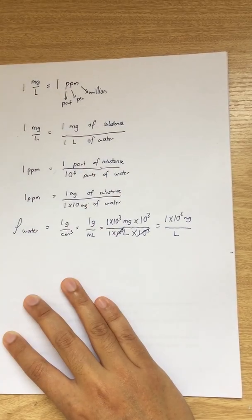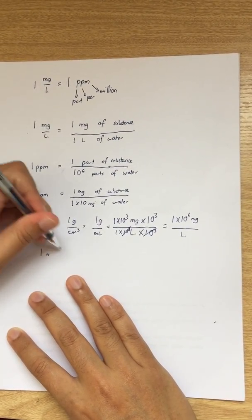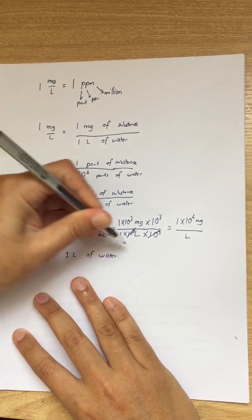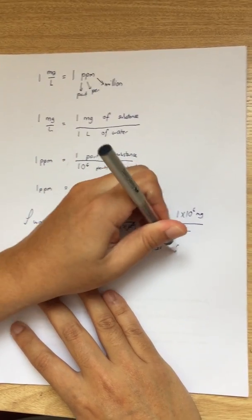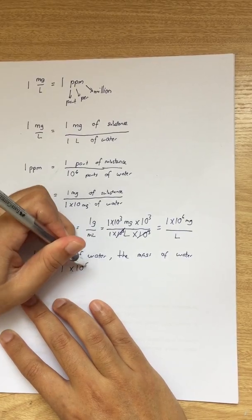So this is basically the density of water. What it means is that in one liter of water, the mass of water is 1,000,000 milligrams.